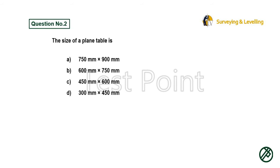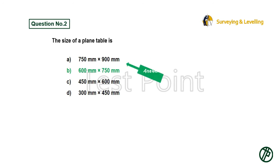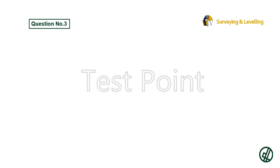Question 2: The size of a plane table is — Option A: 750mm by 900mm. Option B: 600mm by 750mm. Option C: 450mm by 600mm. Option D: 300mm by 450mm. Answer is Option B: 600 millimeters by 750 millimeters.